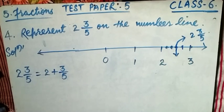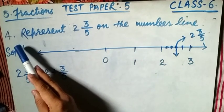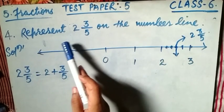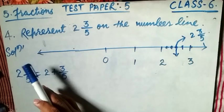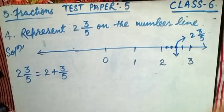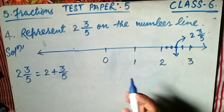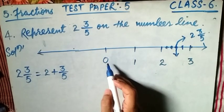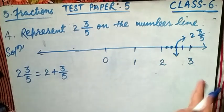Now see Question 4, which we have solved this type in a previous class. Question 4 says: represent 2 and 3/5 on the number line. First of all, we draw the number line and label 0, and to the right: +1, +2, and +3.